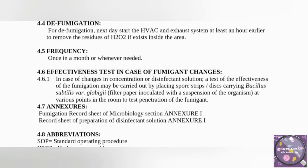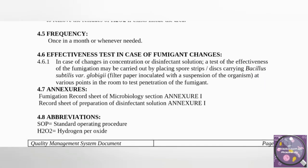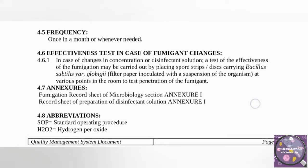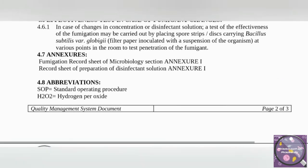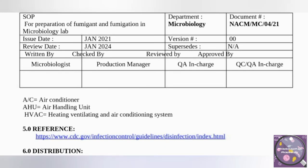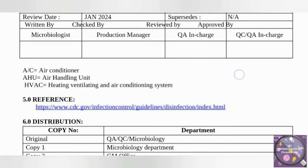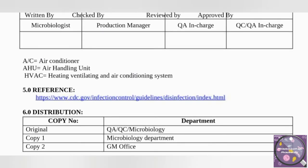Section 4.4 covers defumigation, which is very important because we must remove residues of H2O2. To do that, we should start the HVAC system before starting work. Frequency must be suggested and recommended as per the need of the respective area. There is also an effectiveness test — in case of fumigant changes, we use biological indicators for validation. References, abbreviations, and distributions are also included as per company and ISO requirements.